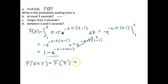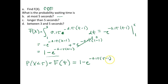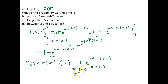We evaluate the CDF at 5: 1 minus e to the negative 0.15 times (5 minus 1), which is 1 minus e to the negative 0.15 times 4, which equals 0.4512.